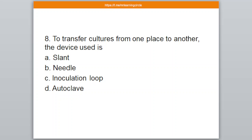Question number 8. To transfer cultures from one place to another, the device used is — A: Slant, B: Needle, C: Inoculation, D: Autoclave. The correct answer is B — Needle.